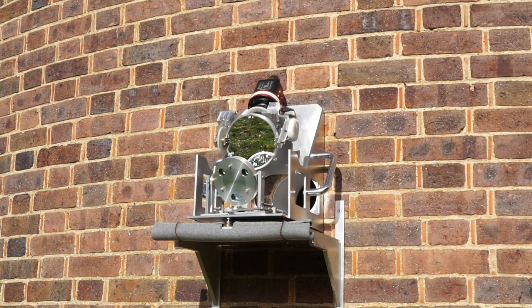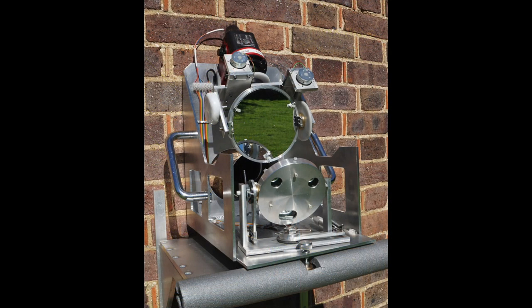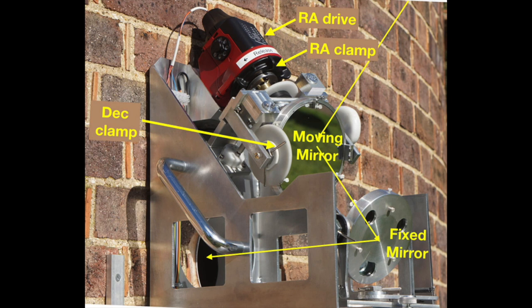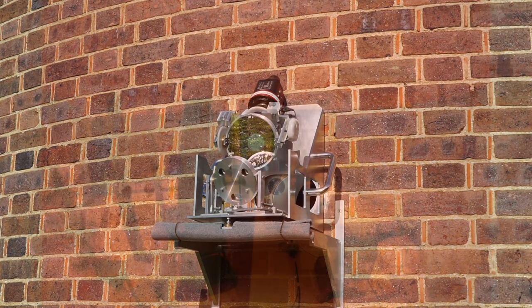It consists of two mirrors. The top mirror is mounted on an axis parallel to the Earth's axis of rotation. It is driven by a motor that follows the sun across the sky, and its angle is adjusted to reflect sunlight onto the bottom mirror, which reflects the light through a hole in the wall.